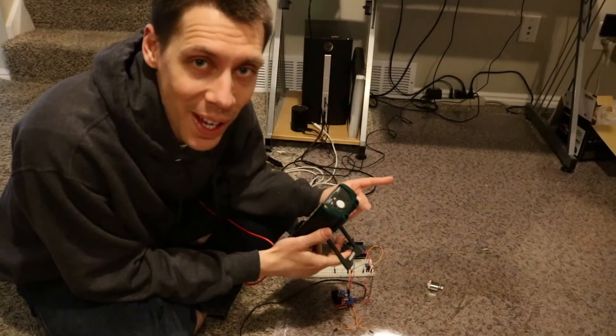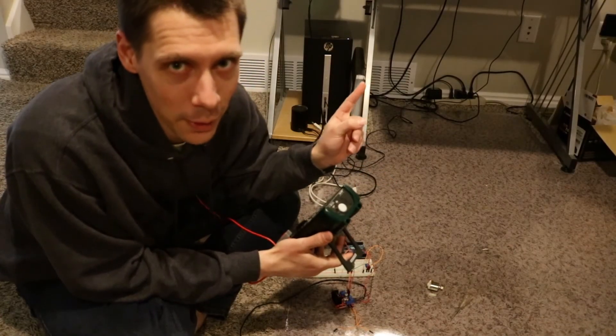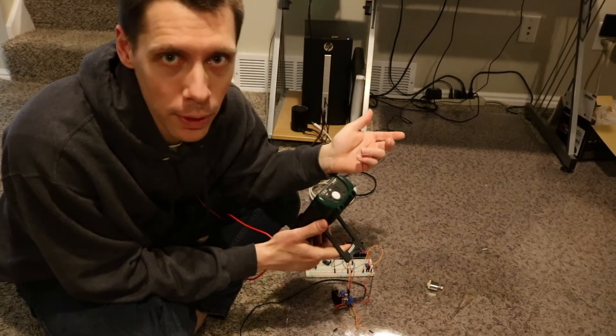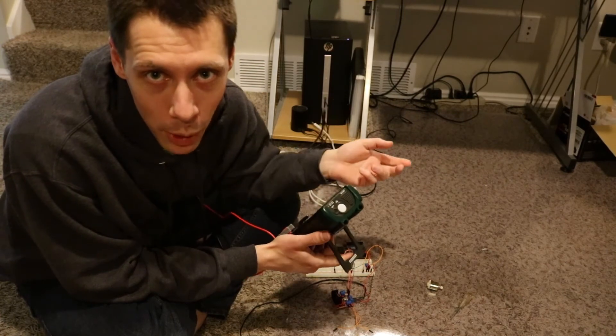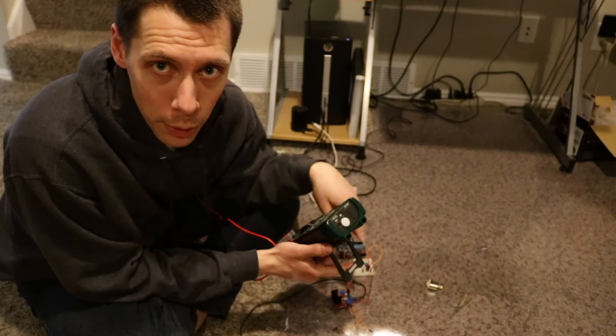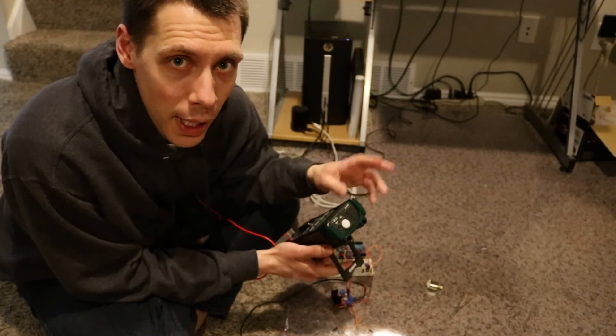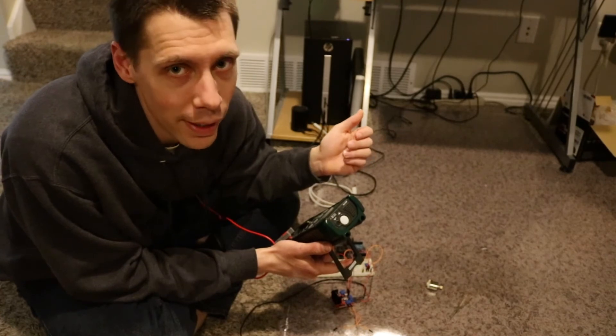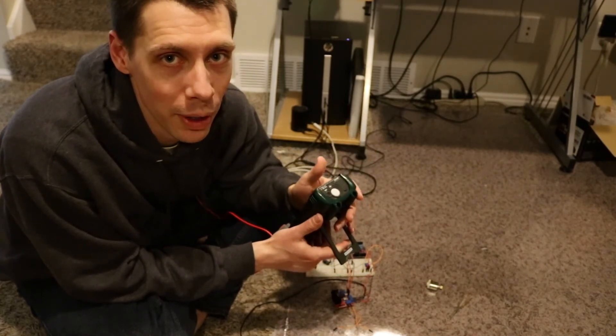Alright guys, so it turns out that what you saw in that video is not quite right. It turns out I had a pin backwards. So instead of the PWM signal going to the PWM input, it was actually going to one of the enables. And the enable is going to the PWM. So it gave me my 0 to 12 volt signal that I needed until I tried to plug it into a motor controller.